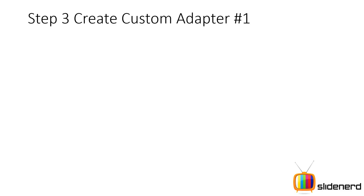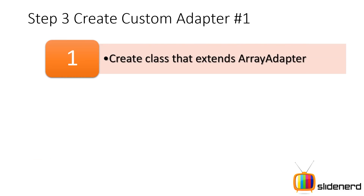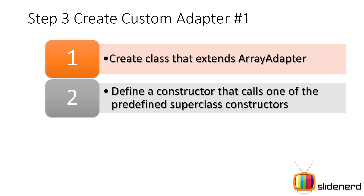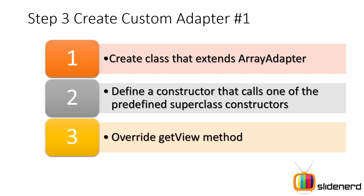Step three: create a custom adapter. This adapter is responsible for taking the data from the defined sources and putting it inside the single-row appearance — that separate XML file. There are three steps involved: first, create a class that extends ArrayAdapter. Your ArrayAdapter has a set of constructors and you need to override one compulsorily. Then, override the getView method, which creates each row by taking the data and placing it into the view.